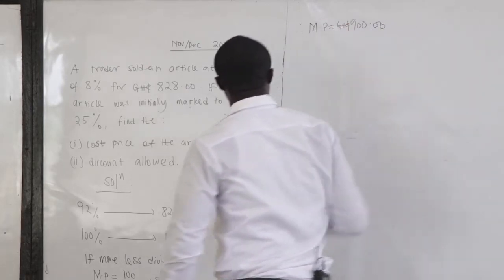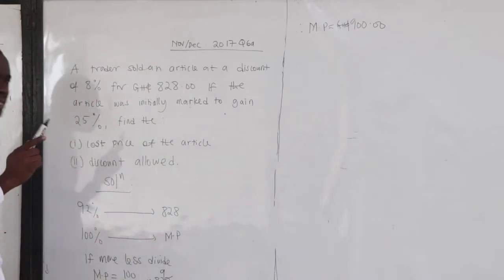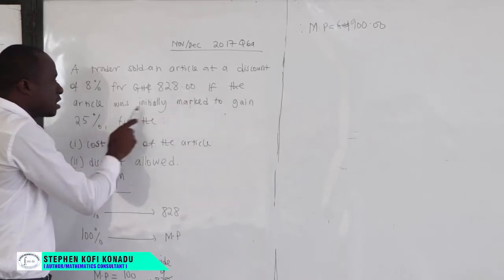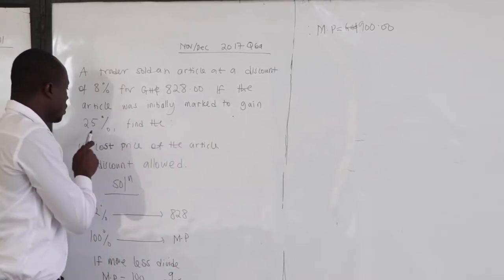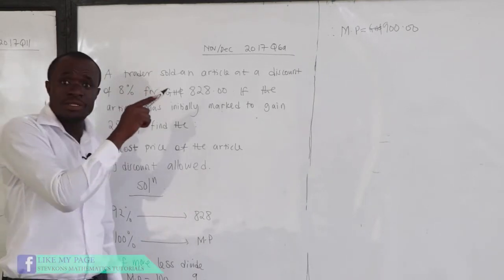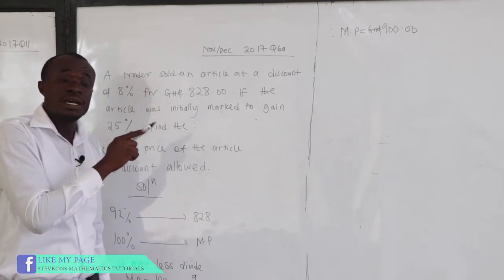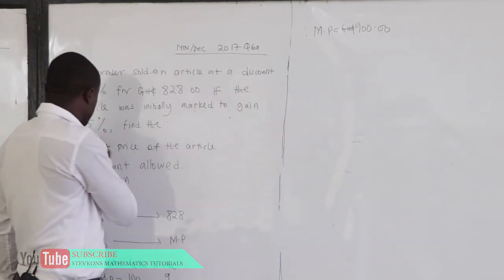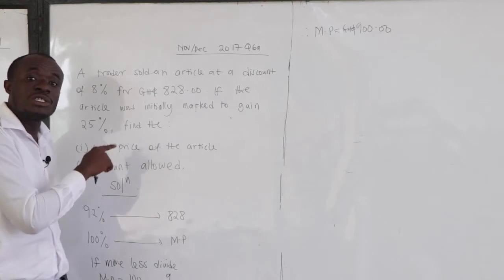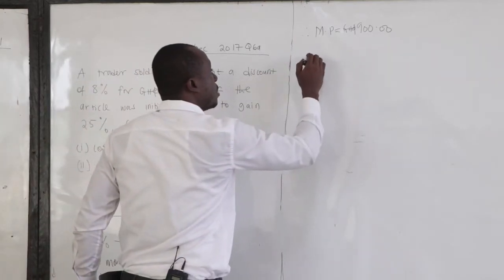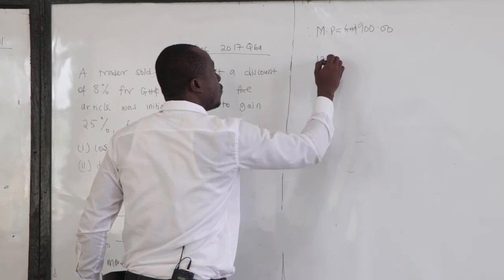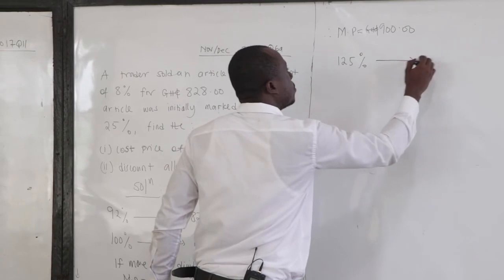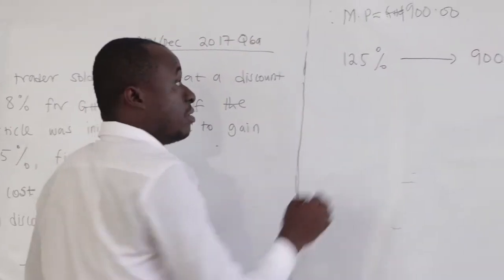Now let's look at the question carefully. It says the article was initially marked to gain 25 percent. So it means that this 900 cedis was as a result of an increase of 25 percent. To gain 25 percent means I have to add 25 percent to 100, giving 125. So this 125 is mapping to 900.